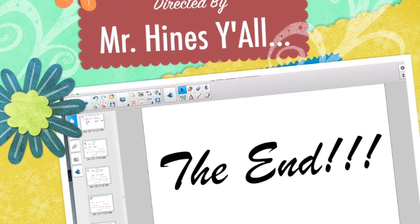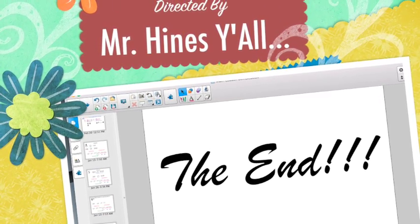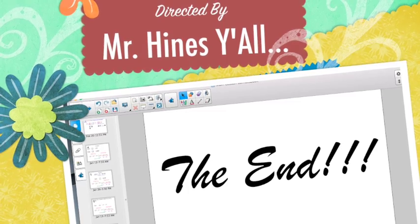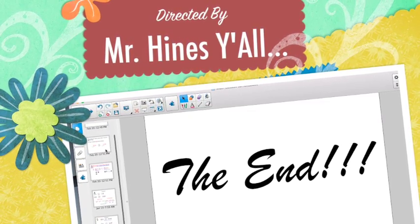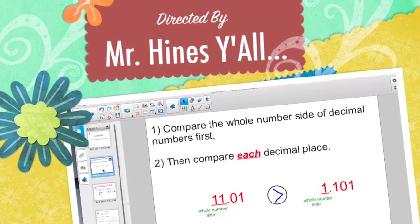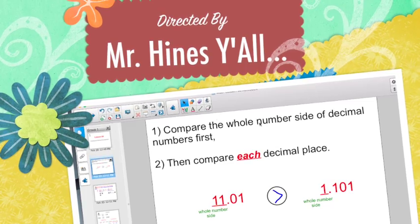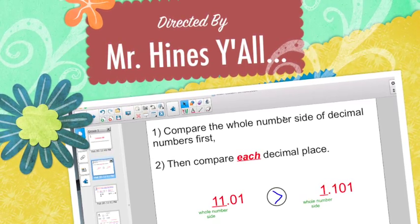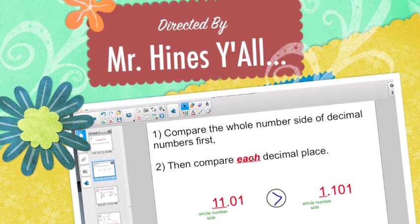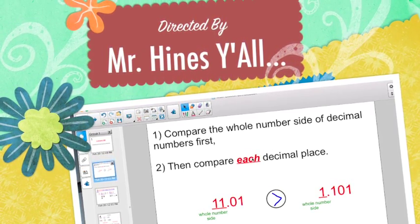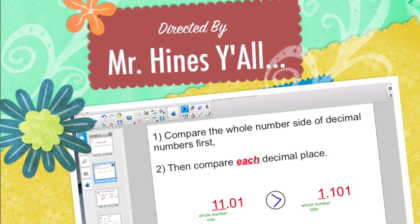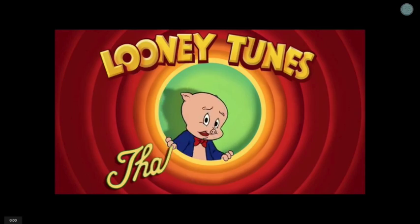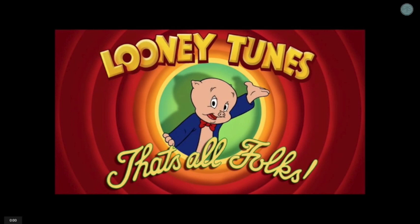Not too tough if you understand your place value and follow the two rules: compare the whole number side first, then compare each decimal place. Good luck on your credit. That's all, folks.